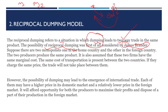Suppose there are two monopolists — one in the home country and the other in the foreign country. M1 is the monopolist in the home country and M2 is the monopolist in the foreign country. These two monopolists produce the same product — say, a car. It is assumed that these two firms have the same marginal cost.